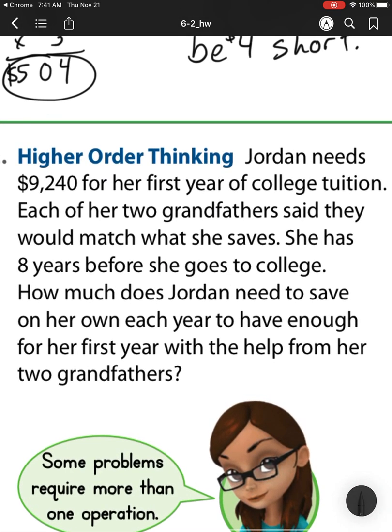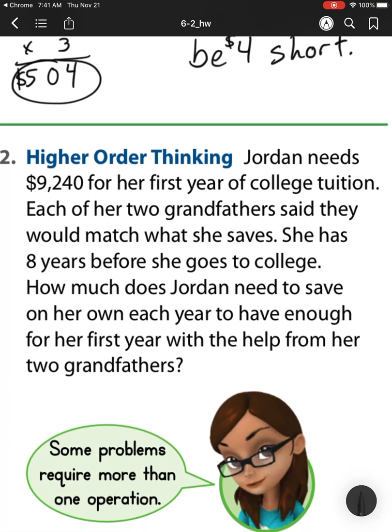Let's head to our number 12 problem. Jordan needs $9,240 for her first year of college tuition. Each of her 2 grandfathers said they would match what she saves. So match means they will give whatever she saves. So she saves $10. Then another grandpa will give her $10. And the other will give her $10. So she'd have $30 total. She has 8 years before she goes to college.